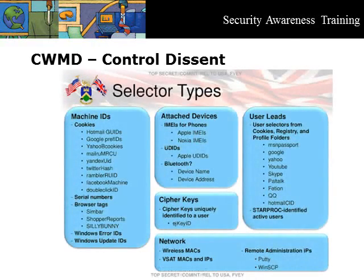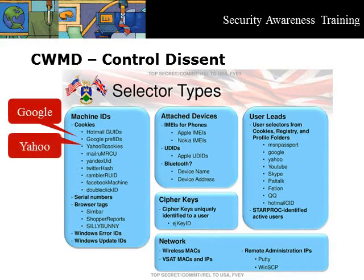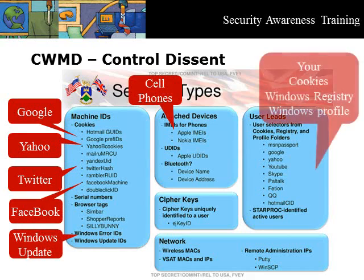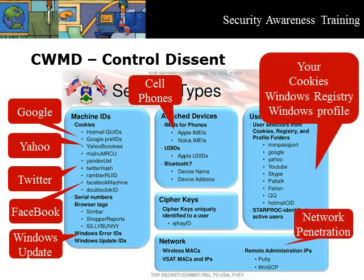Here is a graphic now in the public domain that shows the capability of Turbine. Turbine is fully automated — no humans are required to exploit your online activities, software updates, phones, personal computers, routers, and virtual private networks.